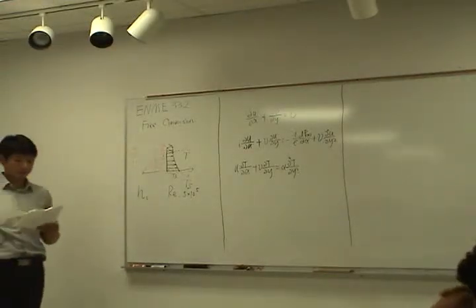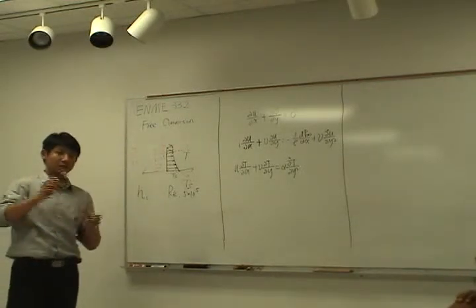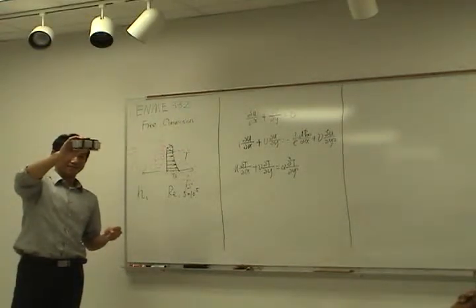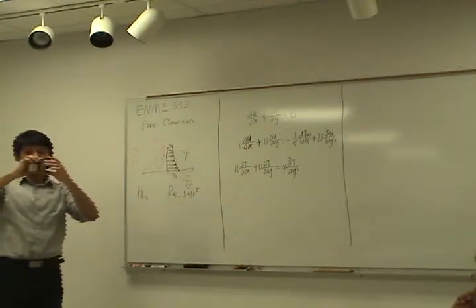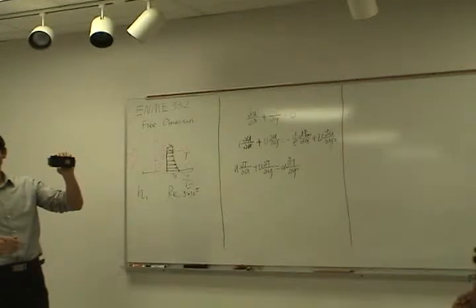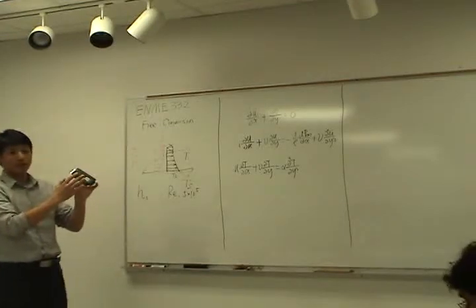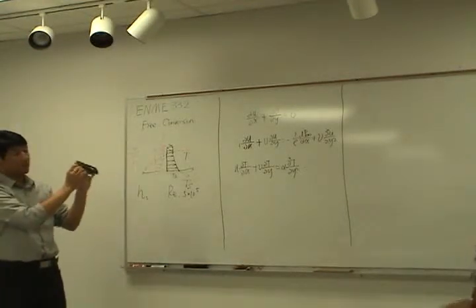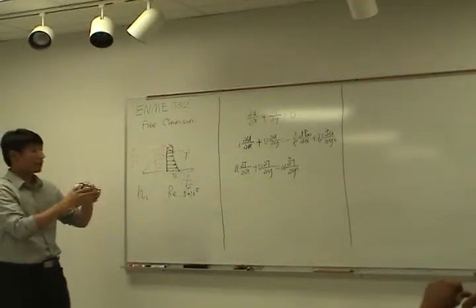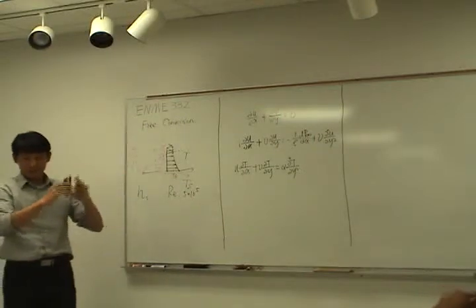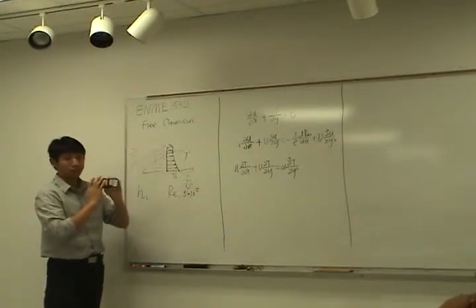For free convection, I brought something — maybe you can take a guess what it is. It's a Pentium 3 CPU. It's huge compared to CPUs right now. This plastic protects the PCB board, and this is the CPU inside. And this is the heat sink to dissipate the heat. This is an example that uses free convection — you can see there's no fan outside, no external force.